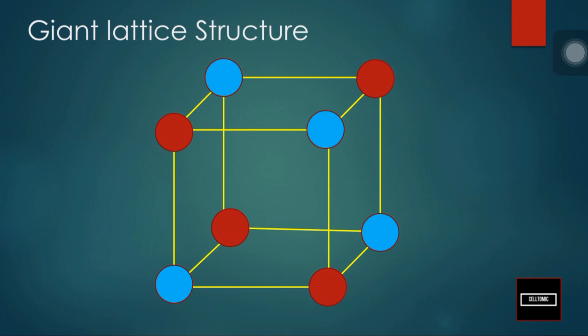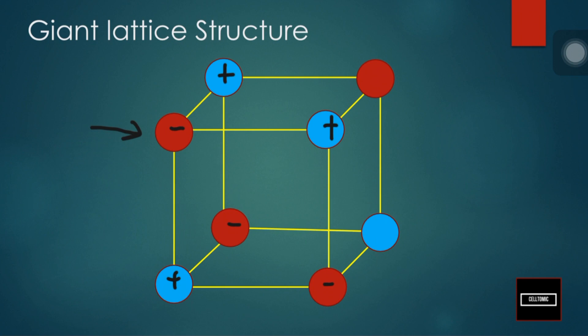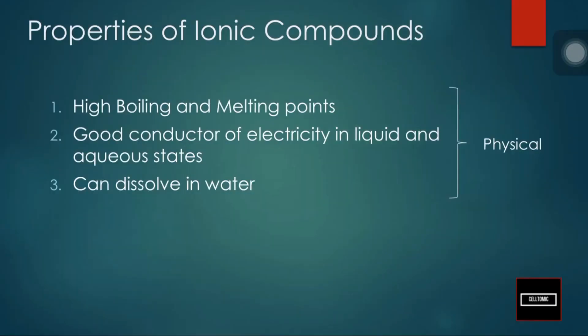This results in a giant lattice structure — the ionic compound is formed. Each ion is surrounded by oppositely charged ions. For example, the positively charged ion is surrounded by negatively charged ions, and each anion is surrounded by cations.